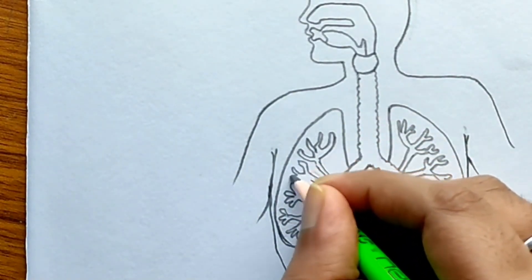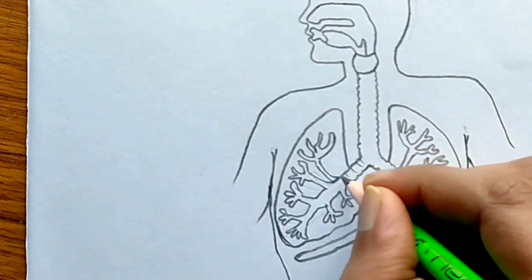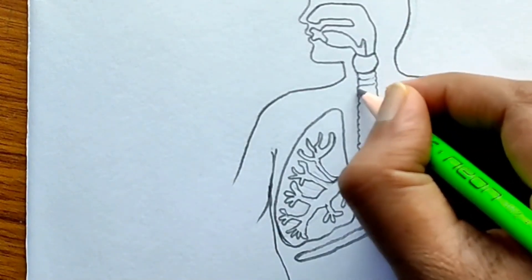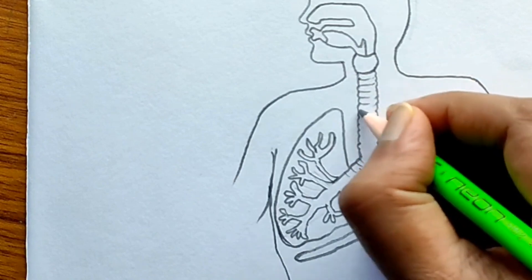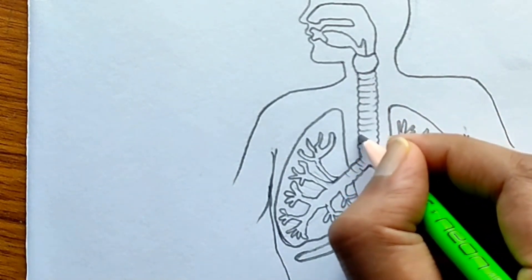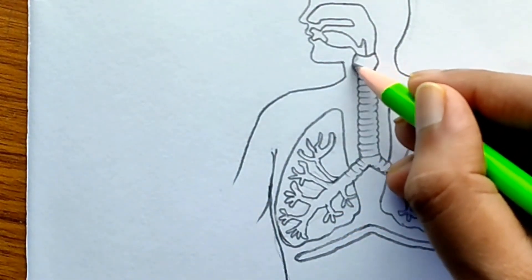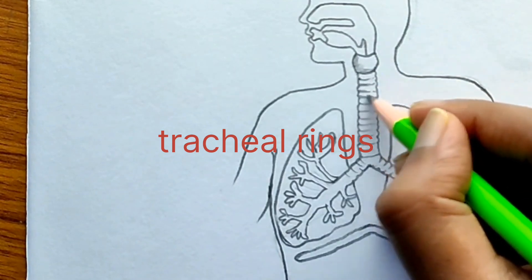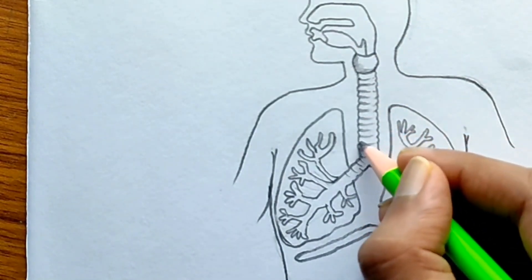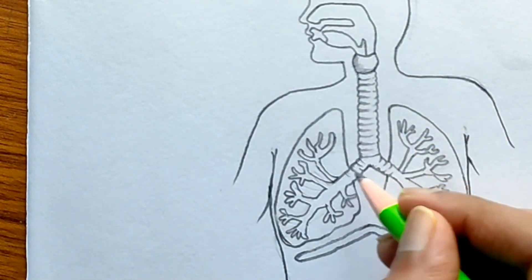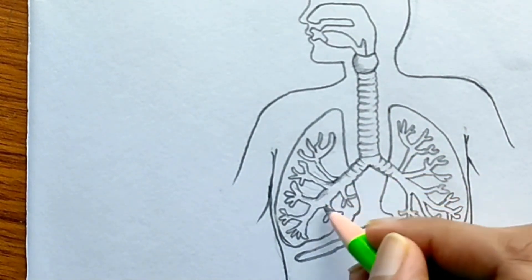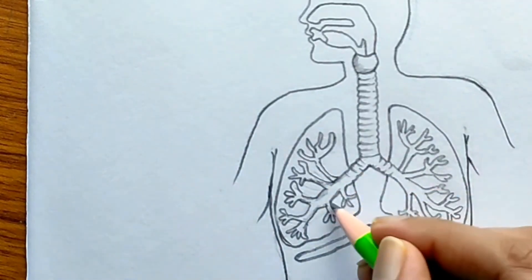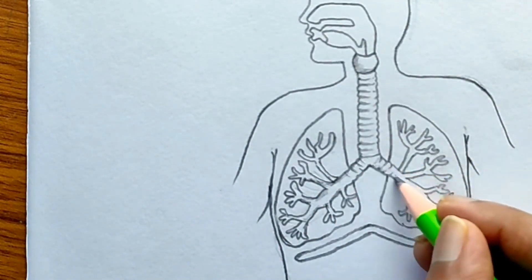After completing the outline, color or darken it to make the diagram look neater and brighter. I am also drawing the tracheal rings — these rings prevent the trachea from collapsing, keeping it always open. Darkening the diagram gives extra marks. By now we have completed the respiratory system.